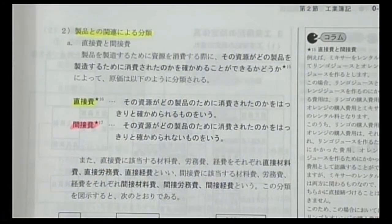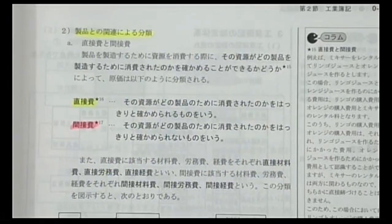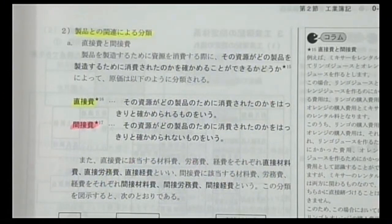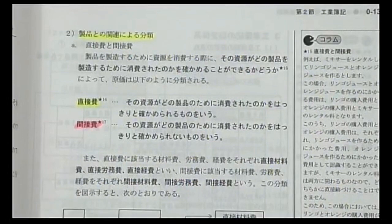カレーを作る例で言うと、人参・ジャガイモ・カレールーなどの材料費は直接費です。料理にかかった高熱費や家賃はカレー1杯分にいくらかかったか分からないので間接費です。形態別分類（材料費・労務費・経費）と製品との関連による分類（直接費・間接費）は組み合わさります。